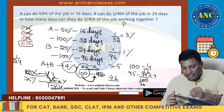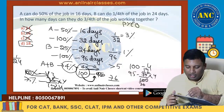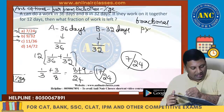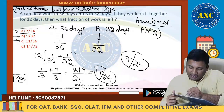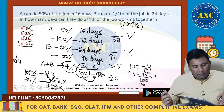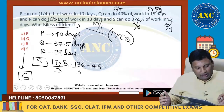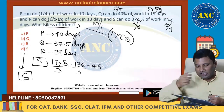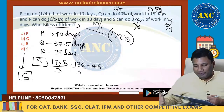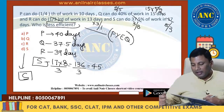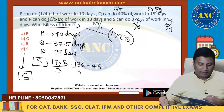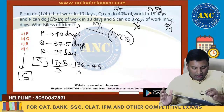These are all previous year exam questions. To recap: P = 40 days, Q = 37.5 days, R = 39 days, S = 136/3 ≈ 45 days. S takes the most days, so S is the least efficient.